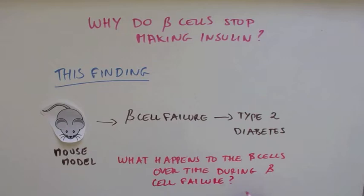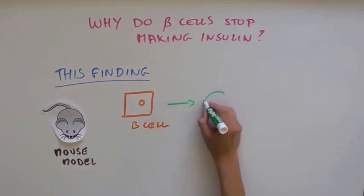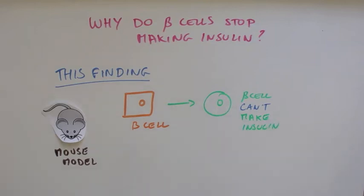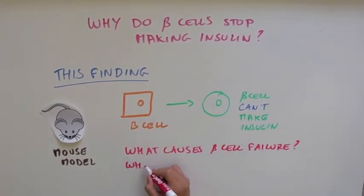To do this, they engineered the mouse so that all beta cells that made insulin were yellow. If a beta cell loses its ability to make insulin, it turns green. So now they are able to answer their question: What causes beta cell failure and what happens to the beta cells?